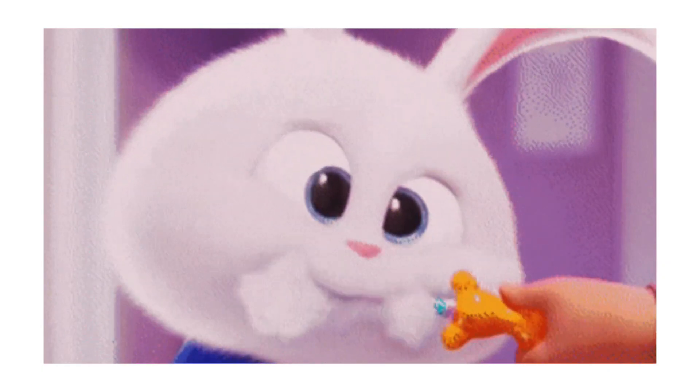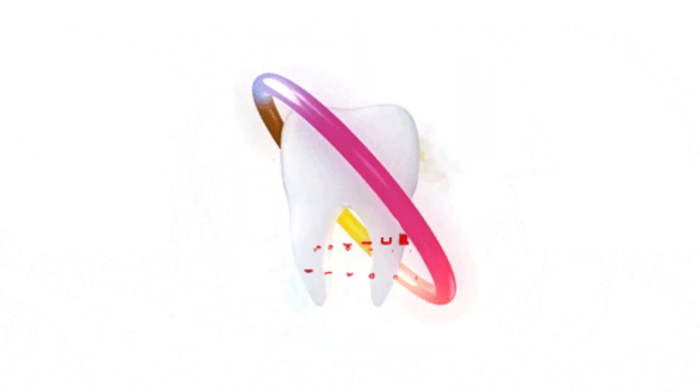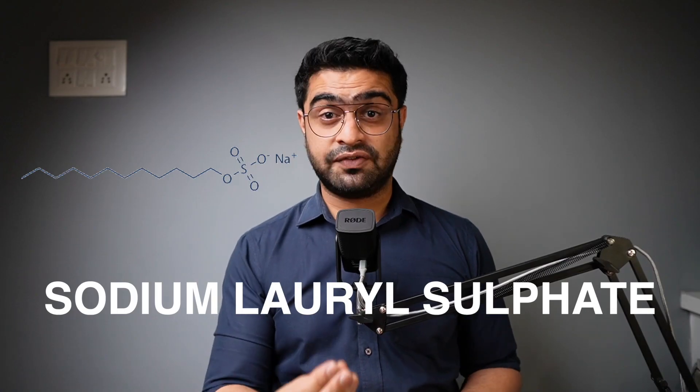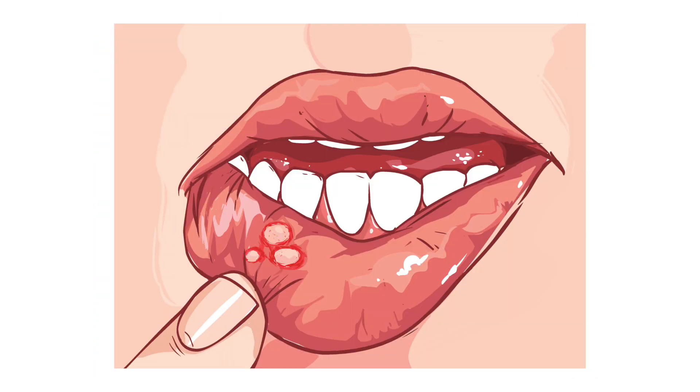Number five is detergents. They are the reason your toothpaste foams as you brush your teeth. The foam ensures the active ingredients coat your teeth, which helps in dislodging the plaque. Sodium lauryl sulfate is one common ingredient. This can cause mouth ulcers in people who are prone to them. If you're not prone to mouth ulcers, then the ingredient is completely safe to use; otherwise, pick one without SLS in it.